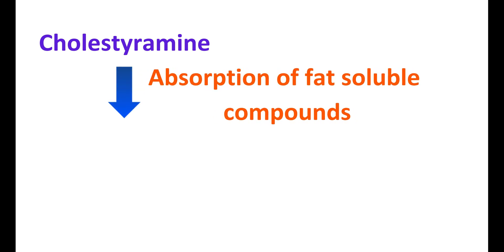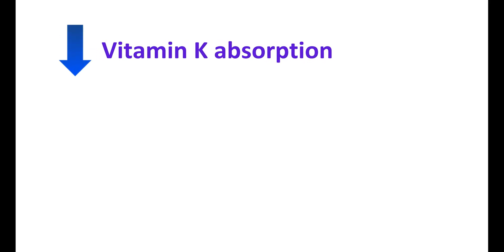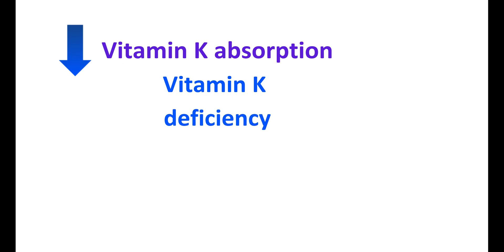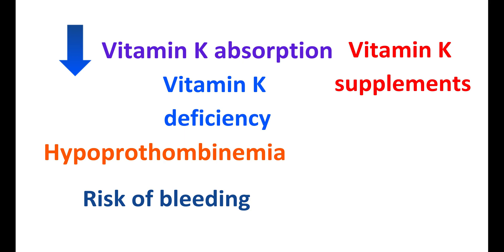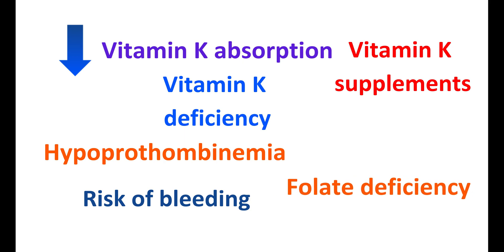Cholestyramine can also reduce the absorption of fat-soluble vitamins A, D, E, and K. In particular, reduced vitamin K absorption may result in vitamin K deficiency with long-term use, leading to hypoprothrombinemia — a condition of decreased prothrombin levels that increases the risk of bleeding. This can be reversed by parenteral vitamin K administration, or prevented by oral vitamin K supplements during long-term cholestyramine therapy. In some people, cholestyramine can also induce folate deficiency, requiring folic acid supplements.